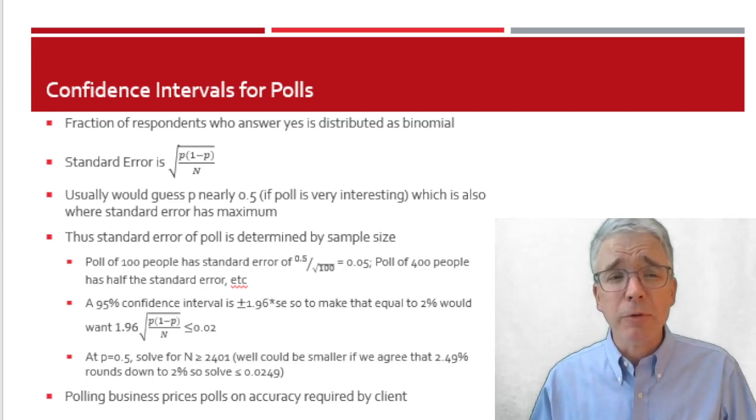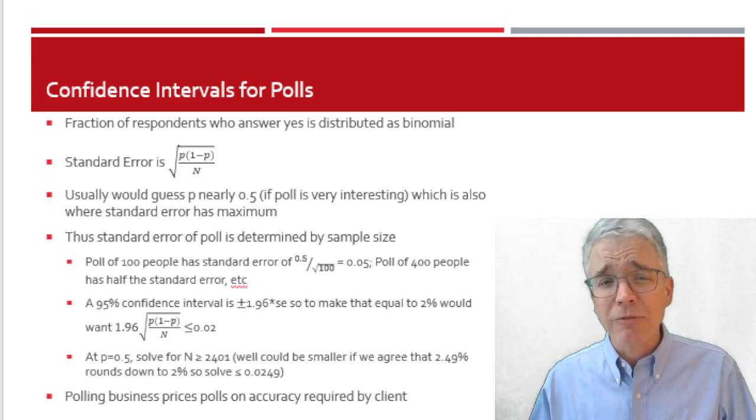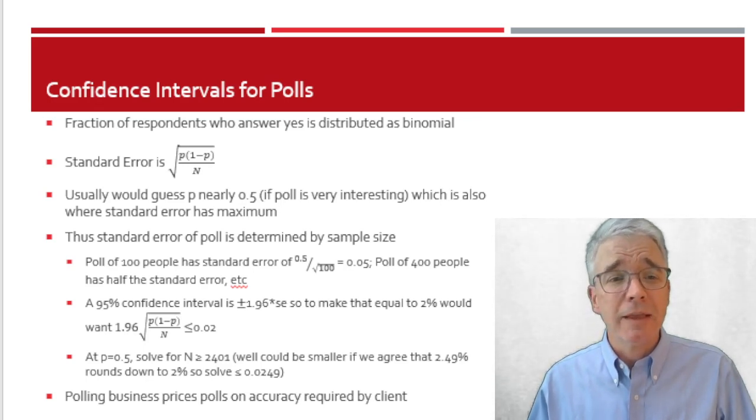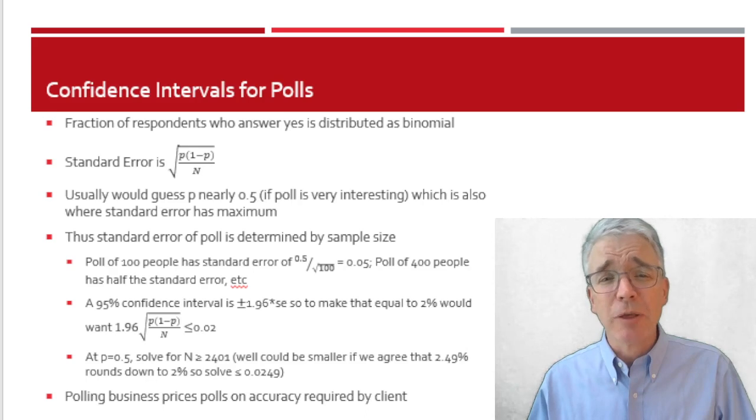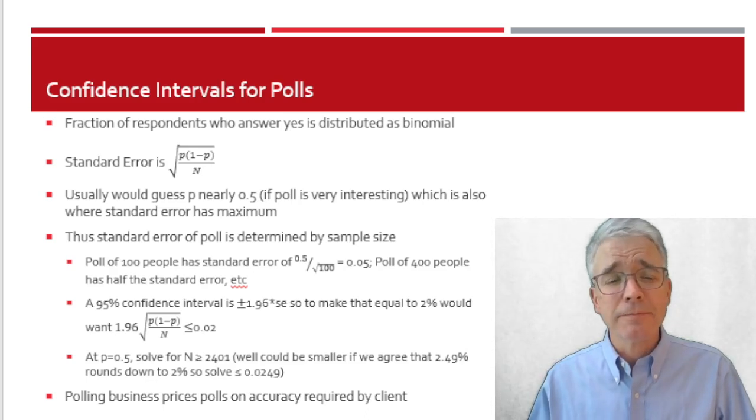Then the standard error is going to be pretty much determined by the sample size. A poll of 100 people would have standard error 0.5 divided by a square root of 100. So that's going to be 5%. If I poll 400 people, four times as many people, the square root of four is two. So half the standard error. If I want a poll to have a confidence level of plus or minus 2%, then solve for n in that little formula there. Takes about 2,400 people. You can shave that down a bit and I'm sure people do.